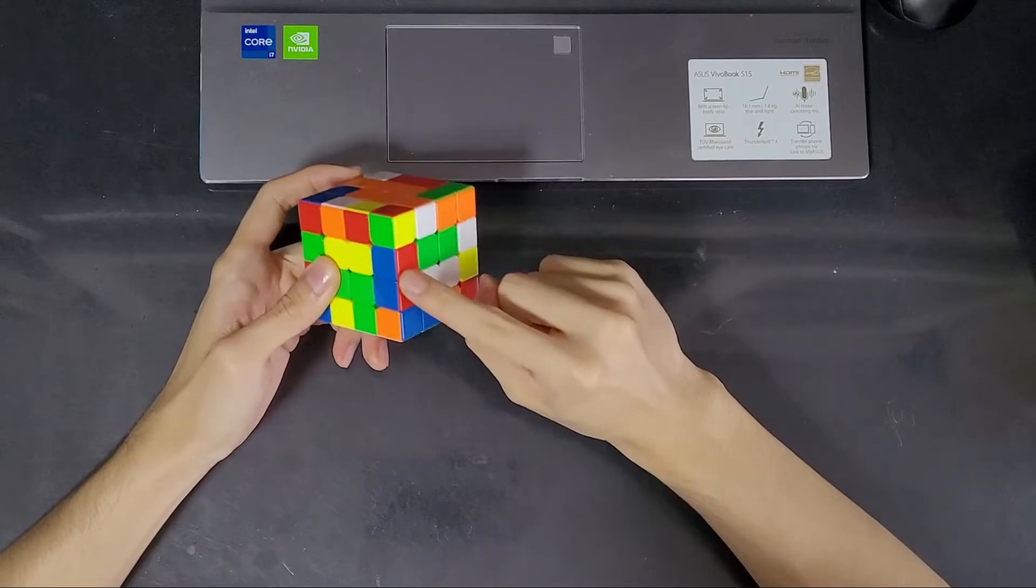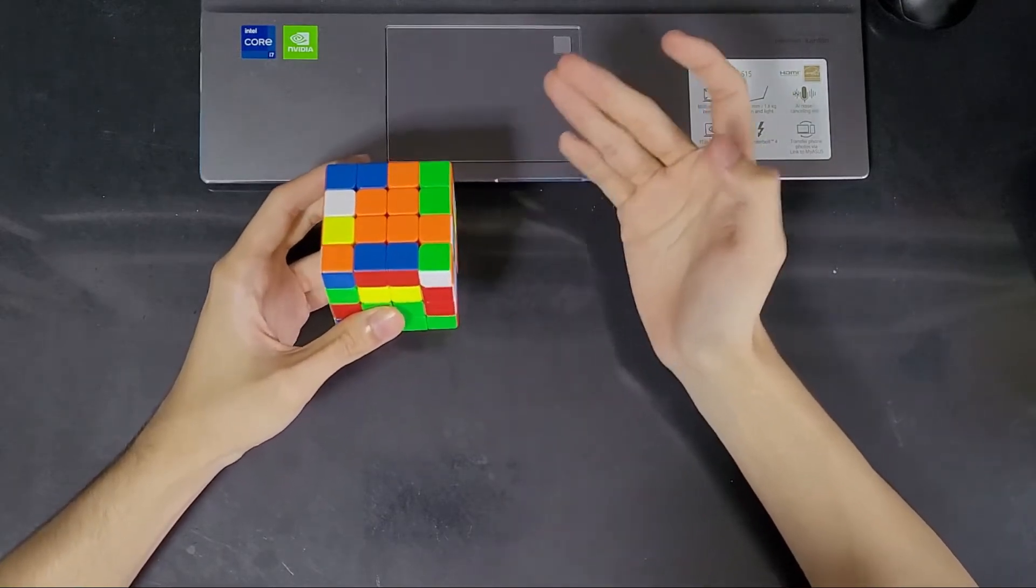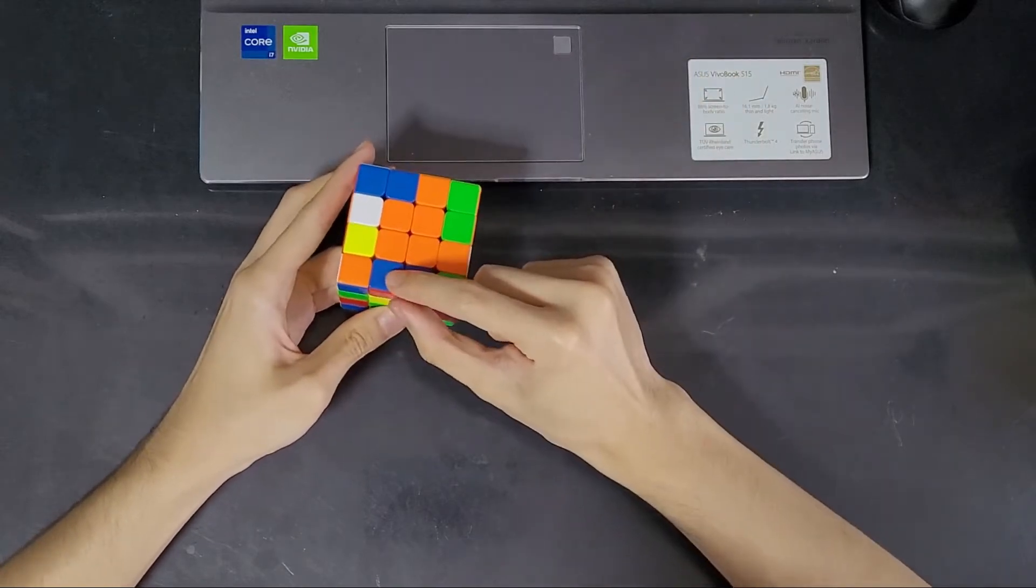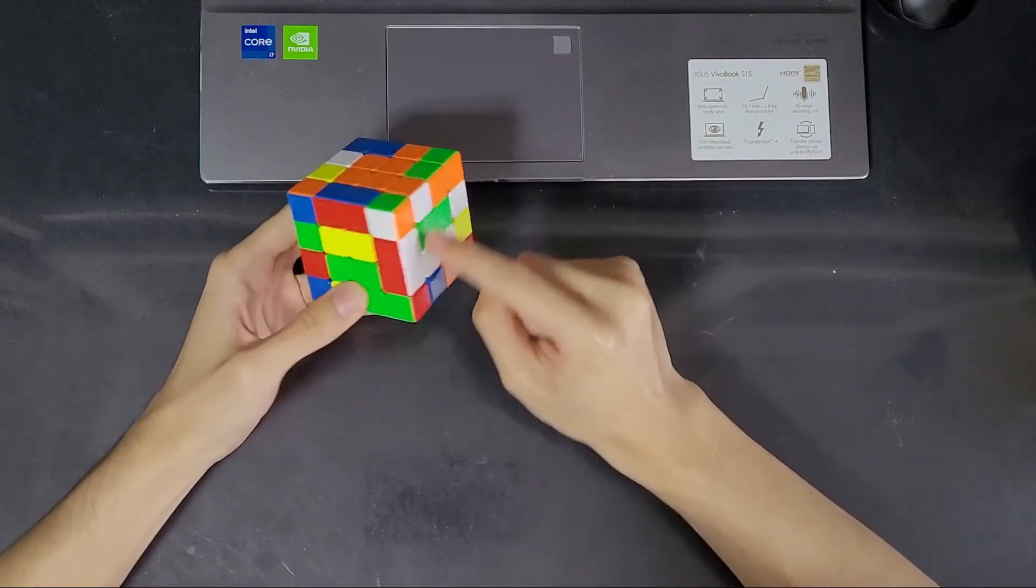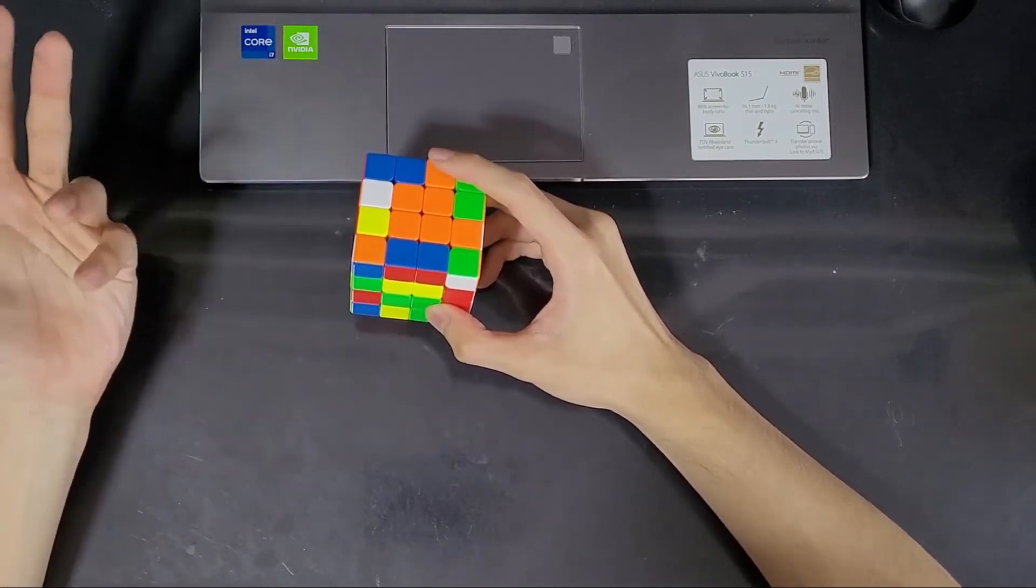So before I take this edge out, I have to be careful about what is the other edge that I'm pulling in. I don't want to pull in another solved edge before I realign the centers because that would mean I'm just breaking up work that has already been done previously.